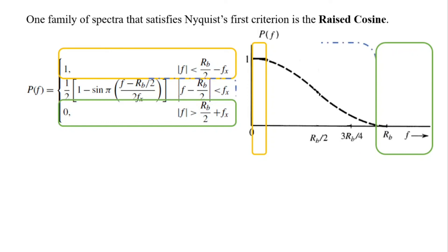In the middle we have a case which ensures a monotonic roll-off and it is 1 minus sine of an argument that is approaching sort of a raised cosine and hence the name. The spectrum shall always be symmetric across Rb by 2.